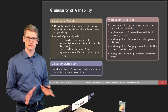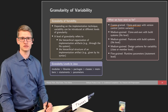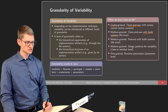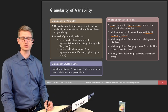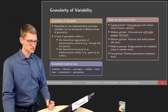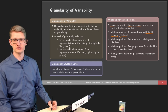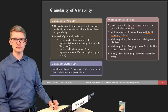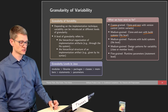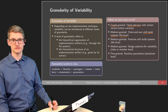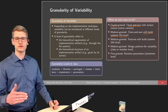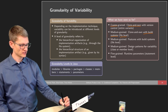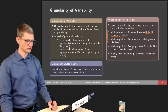We've seen slight improvements when using clone and own with build systems, because we have operations that can work at file level — so we consider this medium-grained variability. Features with build systems, as seen in the first part of the lecture, also allow us to include and exclude files based on feature selection. But this is again at the level of files.